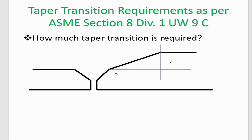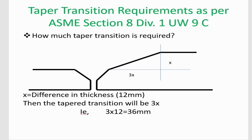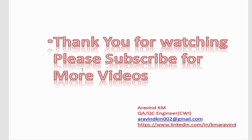The next question is: how much taper transition is required? In our case, the difference in thickness of the two members is 12 mm — that is x = 12 mm. The taper transition must be 3 times that of the difference in thickness, that is 3 × 12 = 36 mm. The relationship between the difference in thickness and the required taper transition is 1:3. That means if the difference in thickness is x, then the taper transition must be 3 times x.